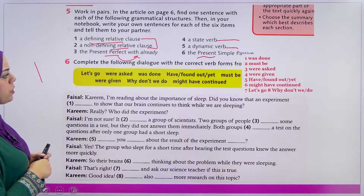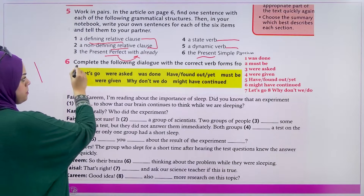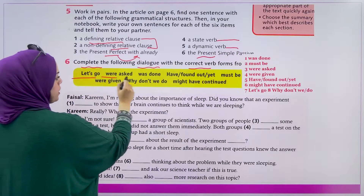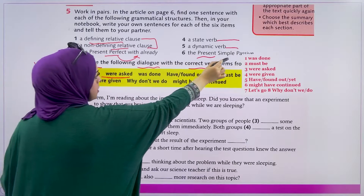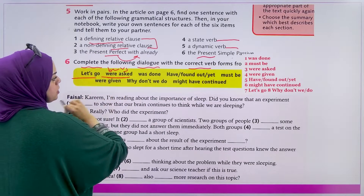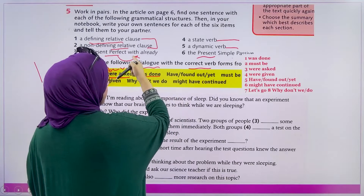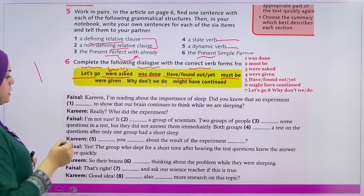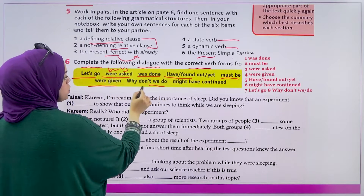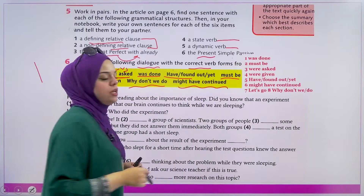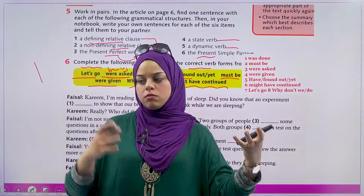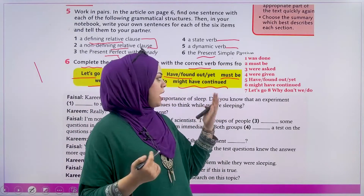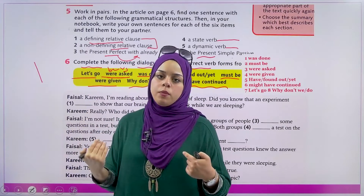Complete the following dialogue with the correct verb forms from the box. The options include: 'was done' (passive), 'have found' (present perfect — have + verb three), 'must be,' 'were given' (passive), 'why don't we' (suggestion), and 'might have continued' — this is a modal with perfect, used to talk about a past action that possibly happened, like 'might have continued' meaning they possibly continued in the past.